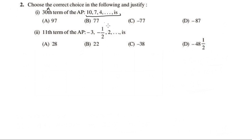A plus n minus 1 into D. Now we have to write this AP. We have to write A. A is 10. D is 7 minus 10, which is equal to negative 3. This is D.